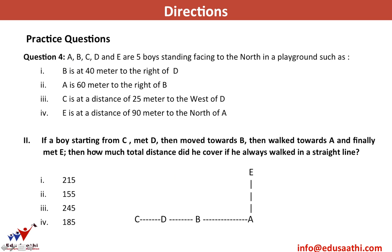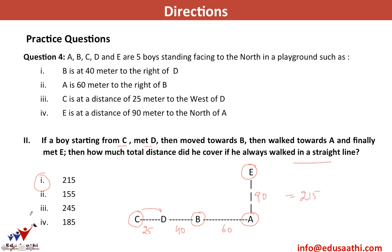A boy starting from C meets D, moves towards B, then walks to A, and finally meets E in a straight line. Total distance = 25 (C to D) + 40 (D to B) + 60 (B to A) + 90 (A to E) = 215 meters.